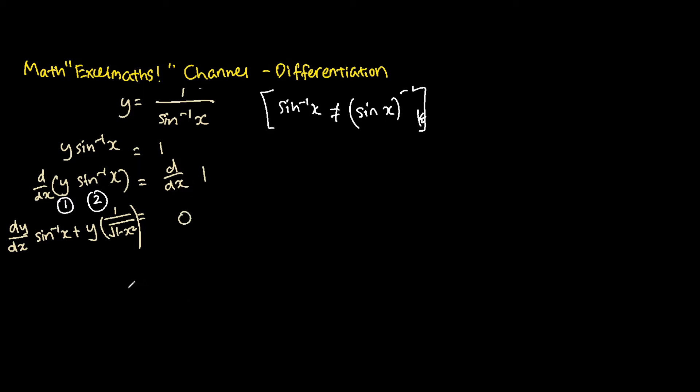So which means that we bring this over, the next thing we'll do is bring this term over to the right hand side of the equation. So what do we have down here? We have dy over dx, sine inverse x is equal to the negative of y, the whole thing bracket, 1 over the square root of 1 minus x squared.